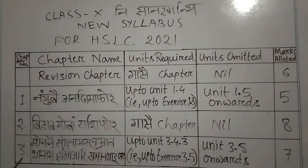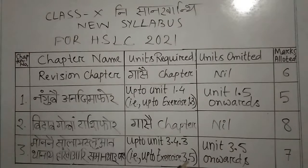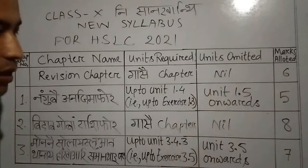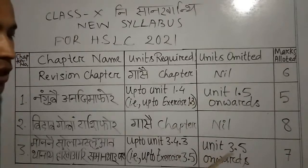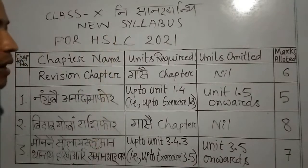Now moving to chapter 3, we will see how many people are doing. We will look at unit 3.4.3, and the exercise is up to exercise 3.5. We have 3.6 units, and this is 3.5 units.